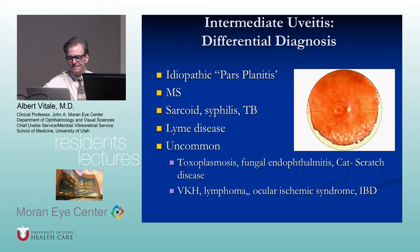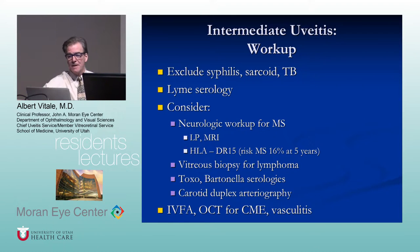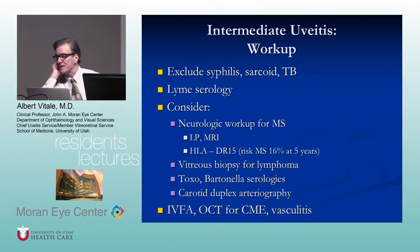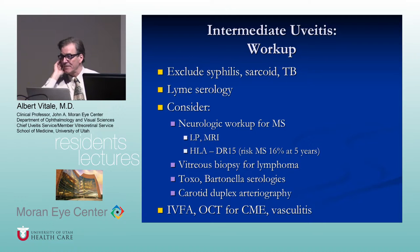Exclude syphilis, sarcoid, TB, and Lyme serology when appropriate. There is an association between pars planitis and the development of multiple sclerosis — about a 16% risk, particularly in HLA-DR patients within five years. That does not mean you should alarm your patients; MS is a clinical diagnosis requiring neurological events separated in time by the McDonald criteria.